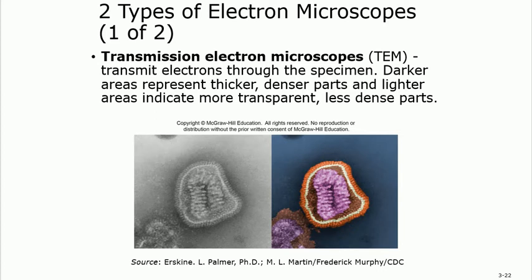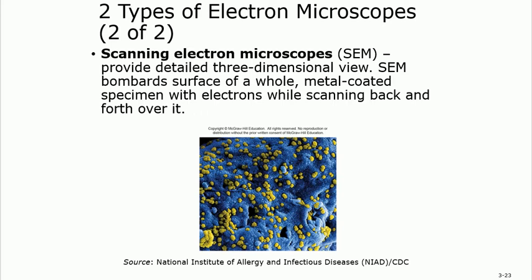There are two types of electron microscopes: TEM and SEM. TEM stands for Transmission Electron Microscope — it shows denser parts as darker and less dense parts as lighter, depending on how many electrons pass through. SEM stands for Scanning Electron Microscope — it scans around the specimen, going back and forth repeatedly, and produces a three-dimensional view. The key feature of SEM is the 3D image.